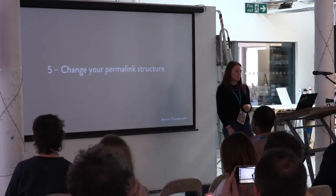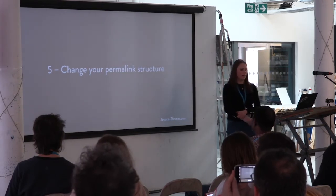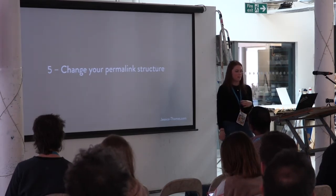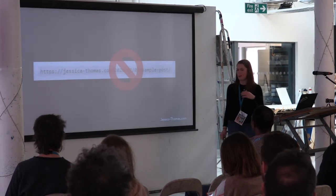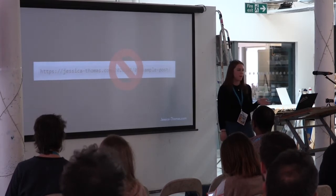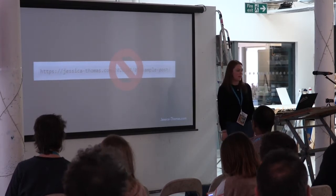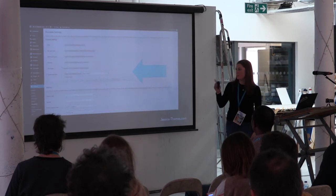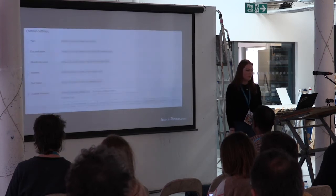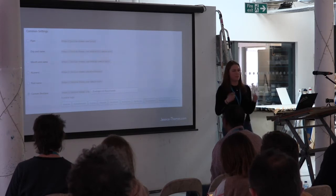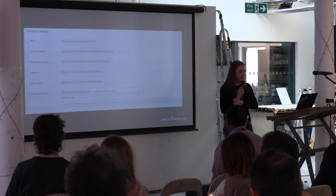Step five is to change your permalink structure. When you first create a WordPress website, it will automatically create a URL structure based around dates, which is quite messy and doesn't help your website from an SEO perspective. I really recommend going in and changing your permalink structure — you can use the post name structure or a custom structure. I prefer to have the category and then the post name, as this enables you to get some extra keywords into that URL without having to do anything.